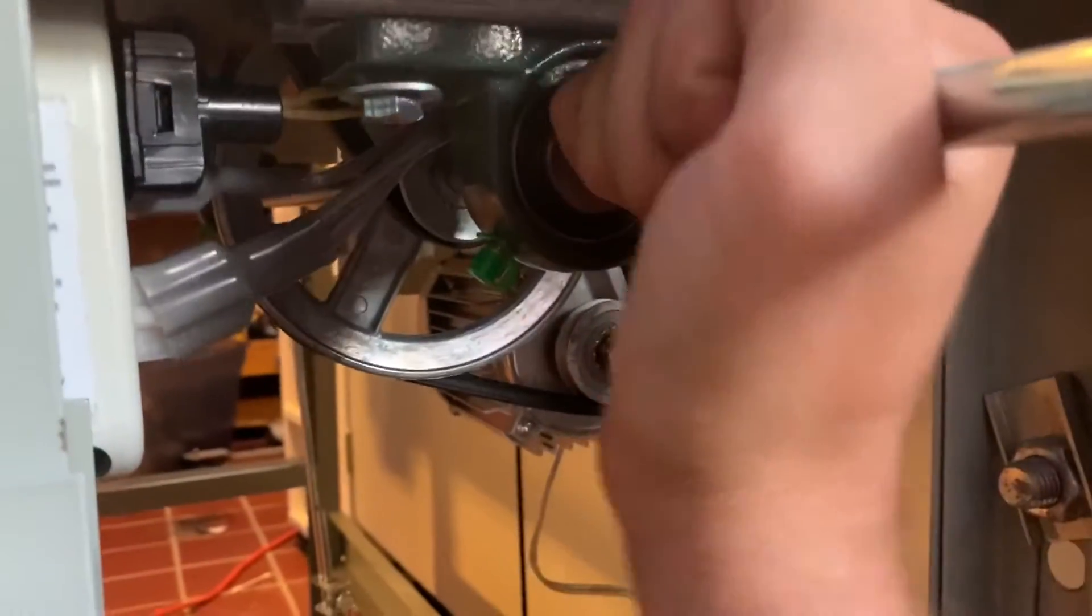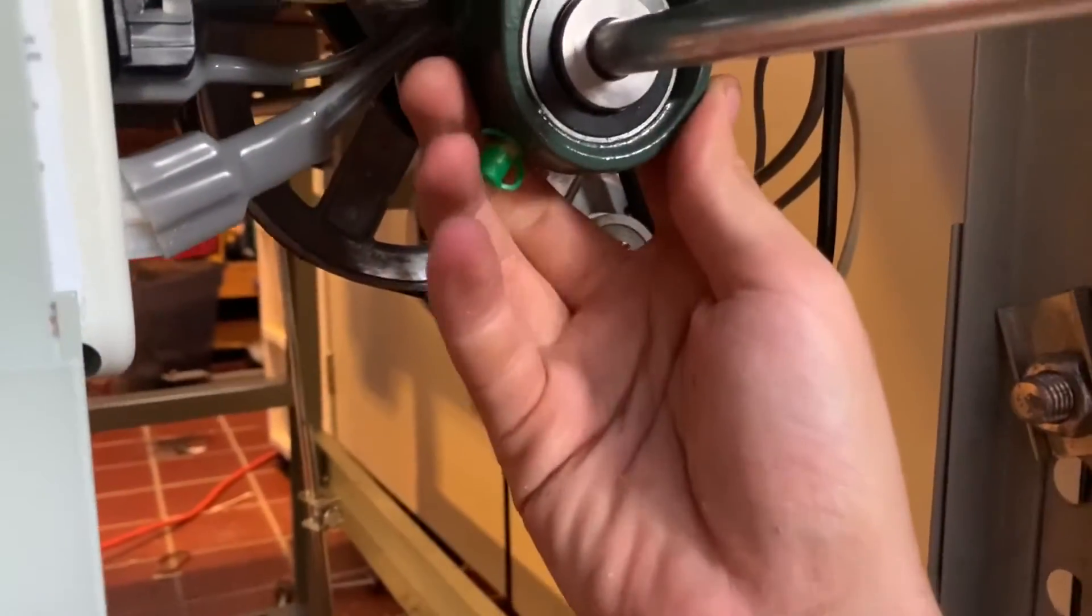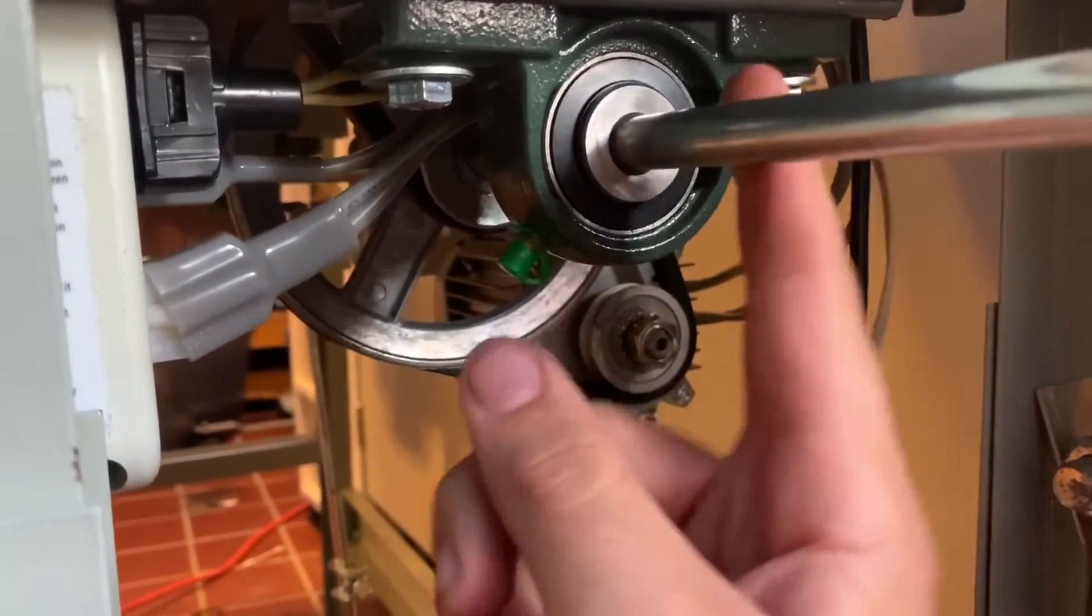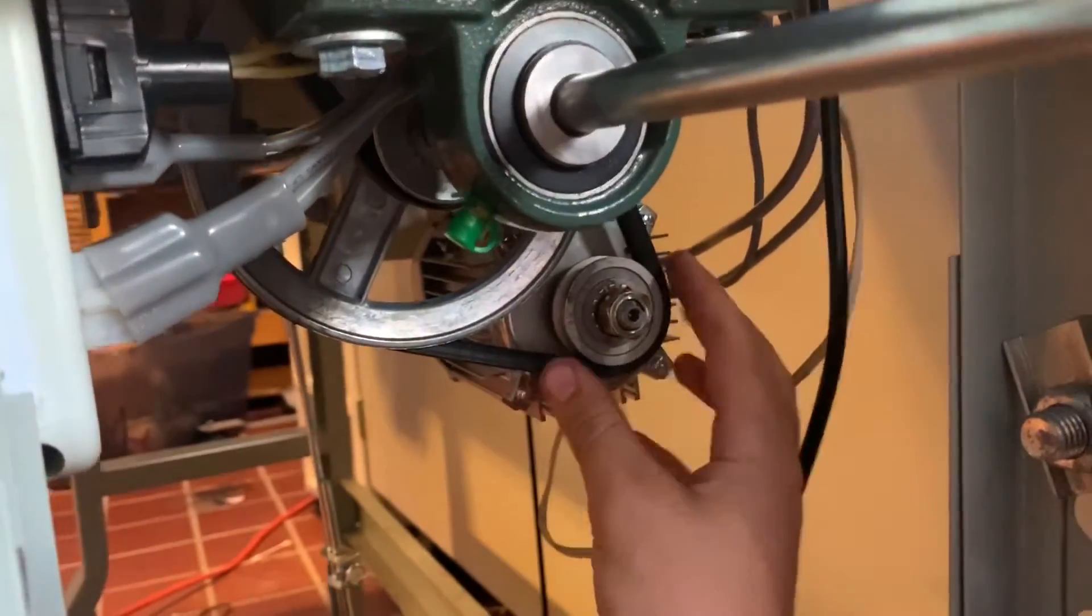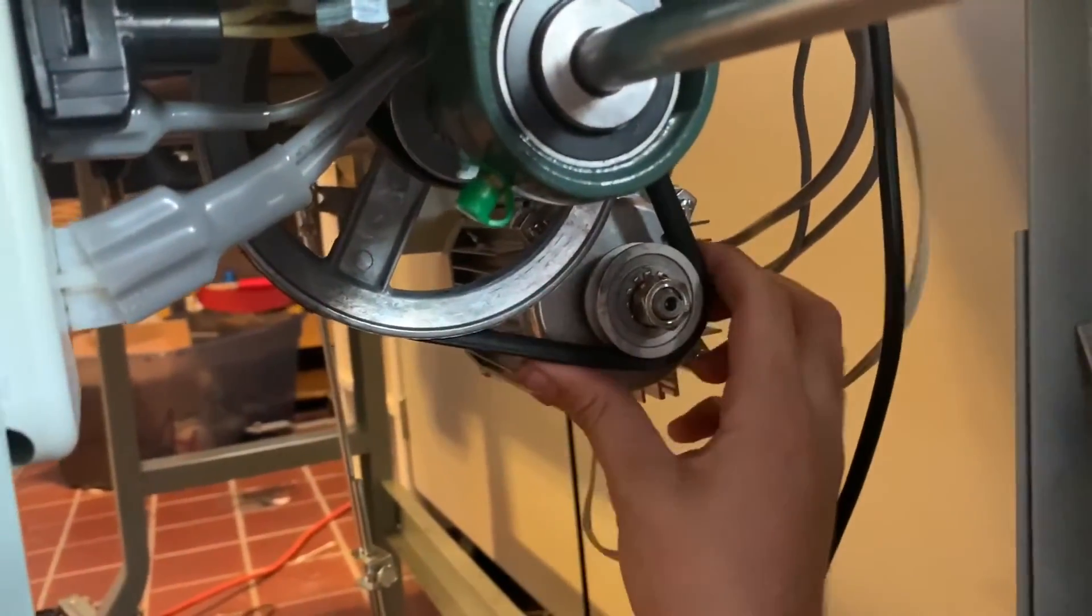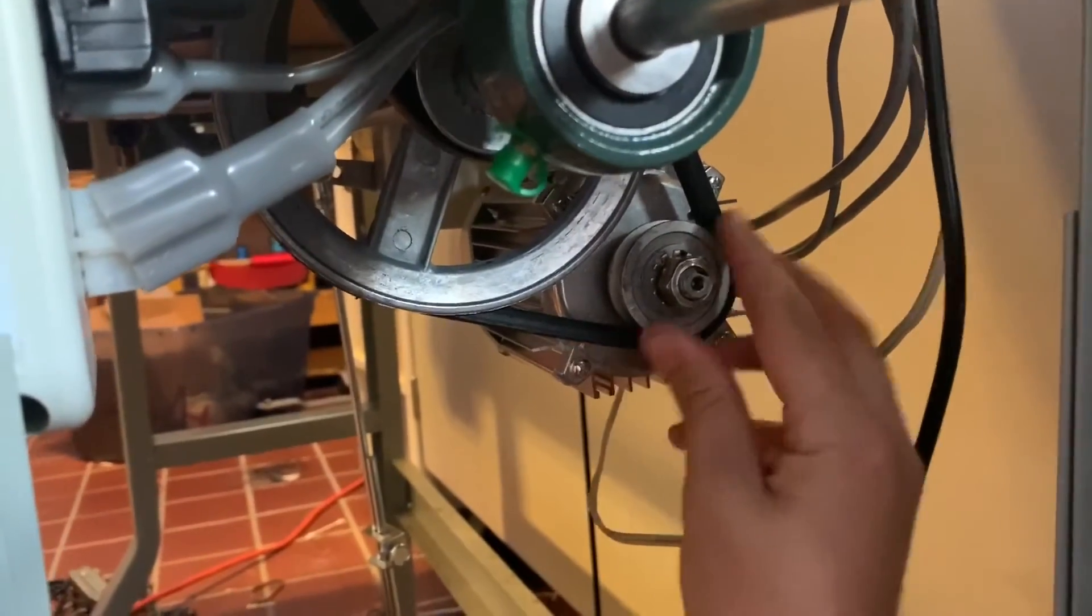When I say speed reducer, we've got this shaft right here. It goes into this pillow block. Half inch pillow block, half inch shaft. This is the motor pulley I replaced for the second attempt. It was a larger pulley and this is a smaller one.